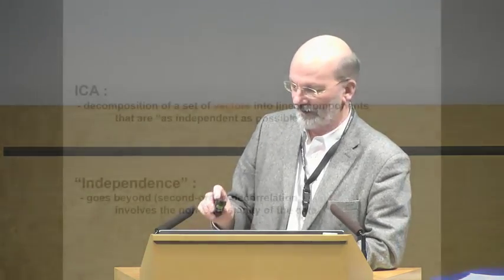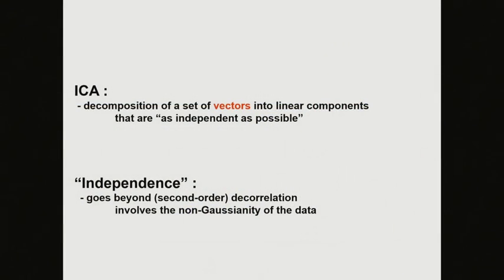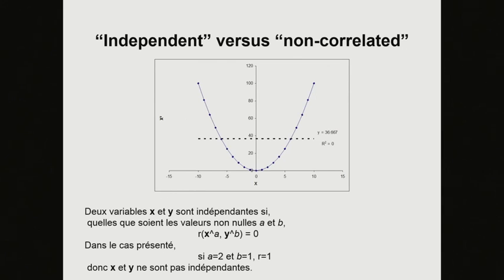ICA is a decomposition of a set of vectors into linear components that are as independent as possible. Independence is more than just not correlated. For example, X squared is a function of X — Excel tells you the correlation coefficient is zero, but they're obviously not independent. Independence requires that the correlation between any power of one and any power of the other must equal zero.